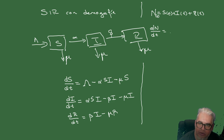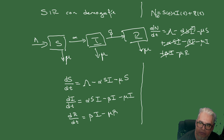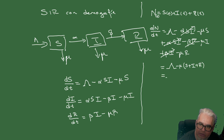Al sumar dS/dt + dI/dt + dR/dt, los términos cruzados (alfa·S·I, beta·I) se cancelan. Únicamente nos queda Lambda menos mu·(S + I + R), que es lo mismo que Lambda menos mu·N. Entonces dN/dt = Lambda - mu·N.